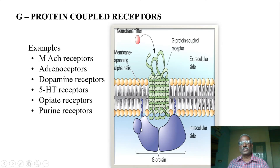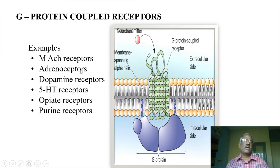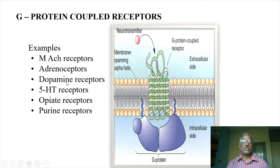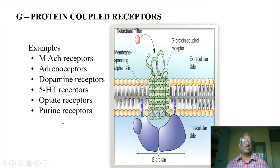That is the G-protein. This is the catalytic domain. Examples of G-protein coupled receptors are: acetylcholine muscarinic receptor, adrenergic alpha-beta receptor, dopamine receptor, 5-hydroxytryptamine receptor, opioid receptor (mu, delta, kappa, sigma, epsilon), and purine receptor.